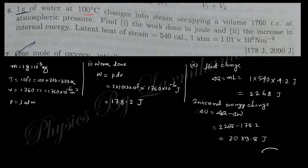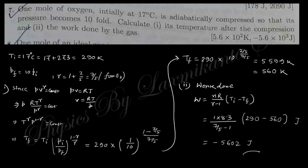Next: 1 gram of water at 100°C changes into steam occupying a given volume at atmospheric pressure. Work done W = P·ΔV, where P is atmospheric pressure and ΔV is the volume change from liquid to steam. The heat change is Q = mL (latent heat). By the first law, the change in internal energy ΔU = Q - W.